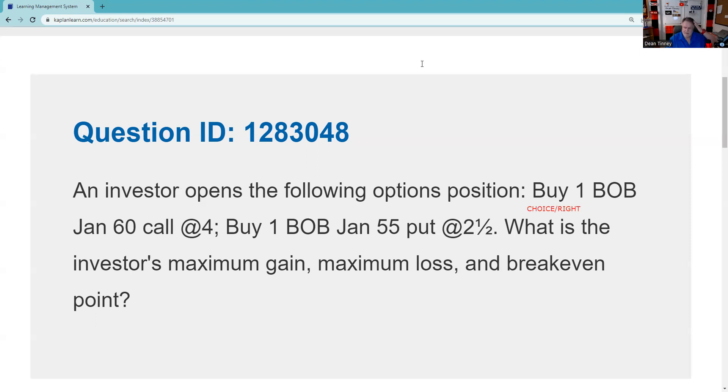So when you hear the word buy, long, owner, holder, you should be able to say, okay, that's a choice. This is a call contract, so this is a choice to buy BOB anytime between now and January, that's important, American style, at $60 a share. And for that choice, or right, I paid four.